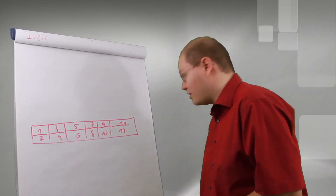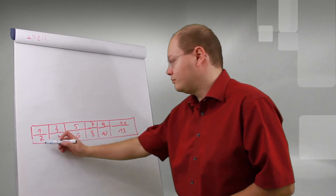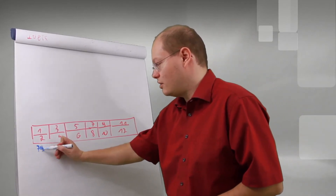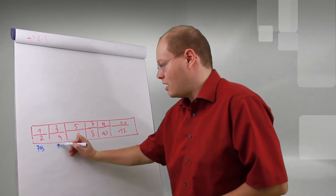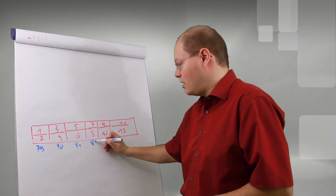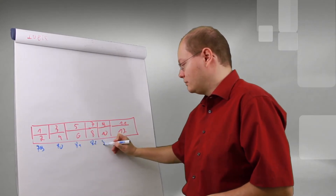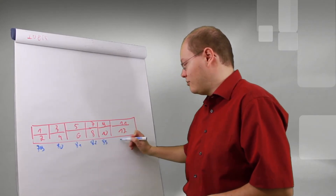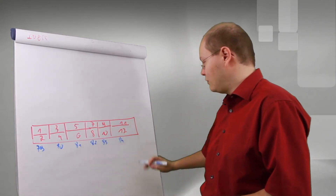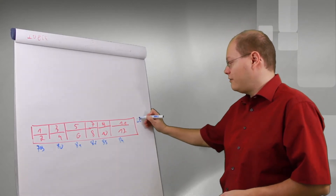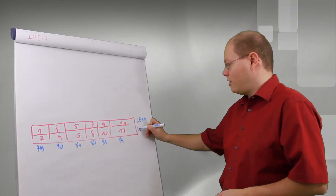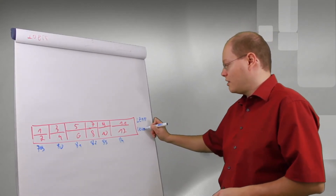Each page in SQL Server has a page number. Imagine we have page 79, 80, 81, 82, 83 and 84. That is the so-called leaf level of our clustered index.